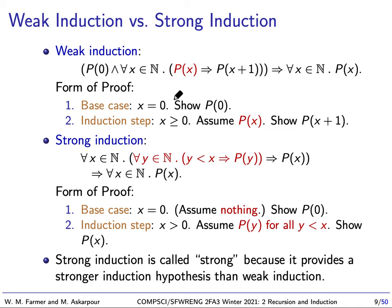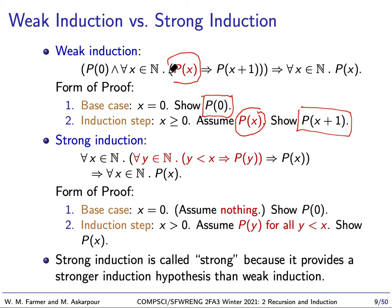Let's review these two principles. In weak induction, we have a base case when x equals zero where we show P(0), and in the induction step, when x is greater than or equal to zero, we try to show P(x+1). We can assume P(x) as our induction hypothesis to help us prove P(x+1). Notice we don't have an induction hypothesis for the base case — there isn't one. So we use P(x) to prove P(x+1).